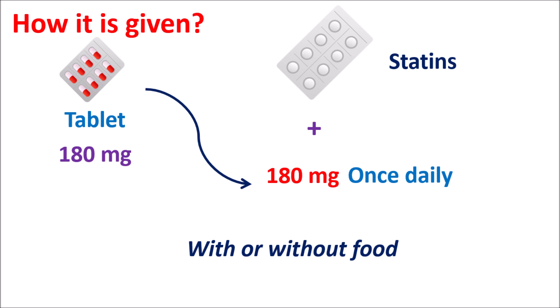That's all about Bempedoic acid, which is a new drug that reduces LDL cholesterol levels when combined with diet control and statin therapy. It facilitates controlling LDL cholesterol levels where statins can be used at low dose and their side effects can be reduced. This drug can elevate uric acid levels resulting in hyperuricemia and can also produce tendon rupture, so on long-term use care should be taken to monitor these two things.